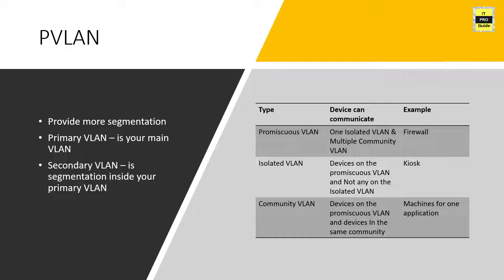The second type is isolated VLAN — devices in the isolated VLAN can only communicate with those on the promiscuous VLAN, but not with other devices on the same isolated VLAN. For example, a kiosk that doesn't need to communicate with other kiosks but still needs to talk to a server. The promiscuous model is mostly suitable for firewalls and networks, and isolated is recommended for kiosks. The third type is community VLAN — these devices can communicate with those on the promiscuous VLAN as well as with devices in the same community VLAN. For example, you can group gaming PCs into a community VLAN so they can talk to each other and also to the promiscuous VLAN.